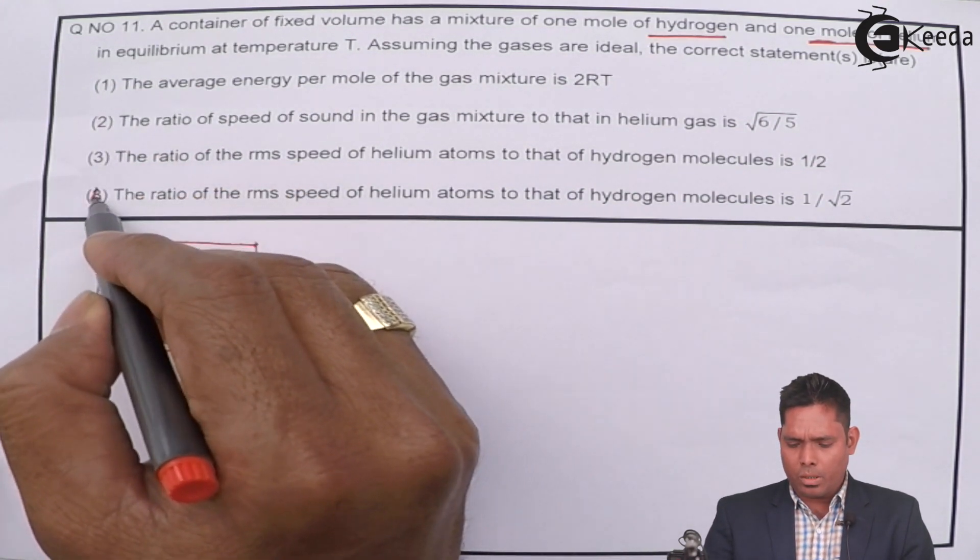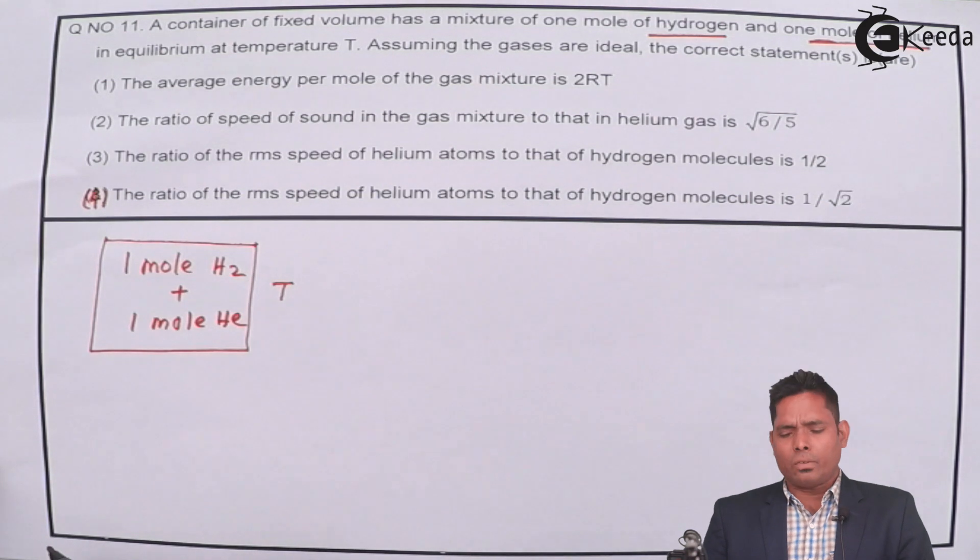Options 1, 2, 3, 4. So this is a multi-correct question. How many of these are correct?